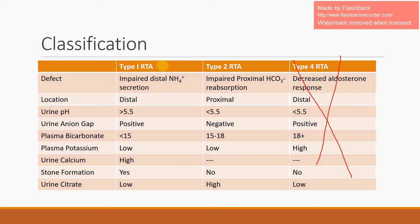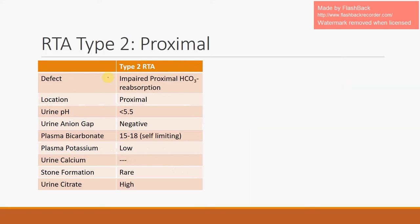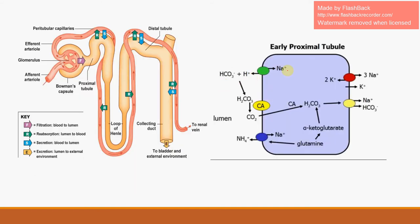Today we will mainly be looking at the differences between type 1 and type 2, and explaining the pathophysiology — for instance, why urine pH will be less than 5.5, why the bicarb isn't as low as in type 1 RTA, and why citrate will be high. The hallmark defect in type 2 renal tubular acidosis is an impaired proximal bicarbonate reabsorption.